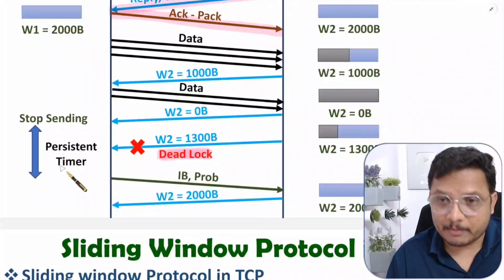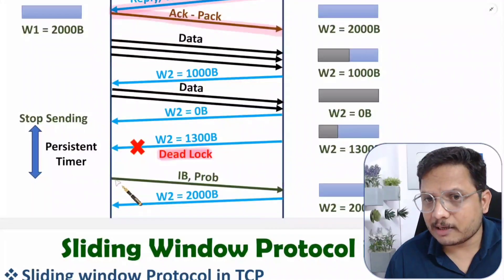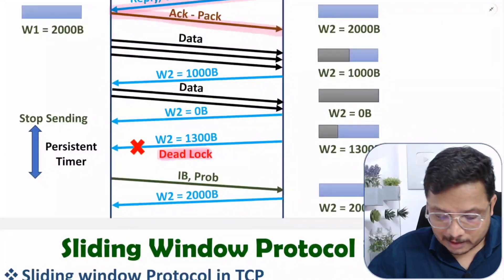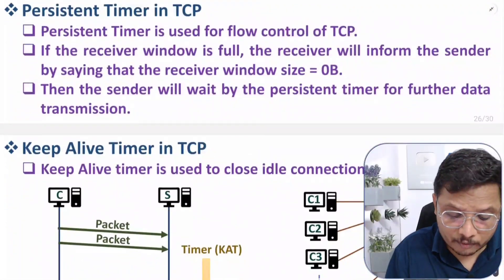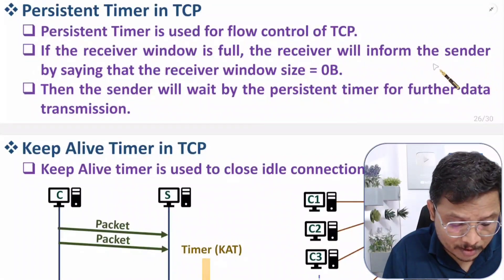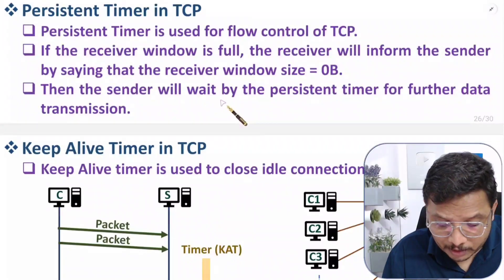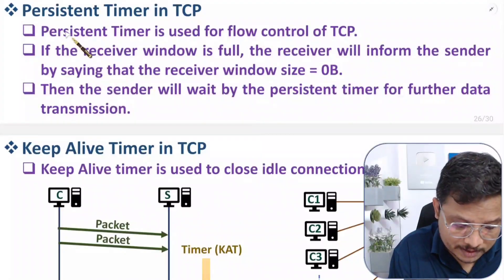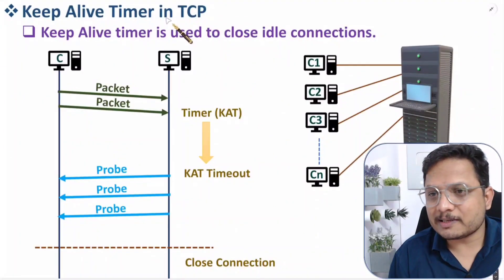The receiver sends an acknowledgement with window size equal to zero bytes, indicating no space is available. The sender then stops sending data and starts the persistent timer. After the persistent timer expires, the sender can restart data transmission. So the persistent timer is used for flow control when the receiver window is full.